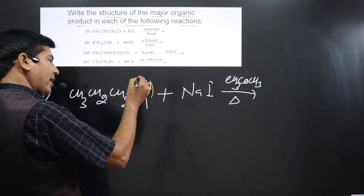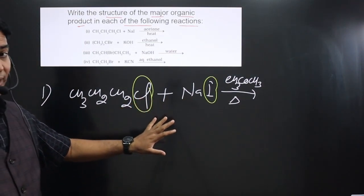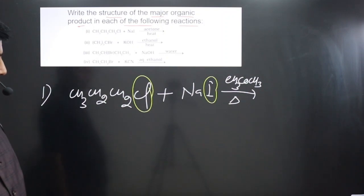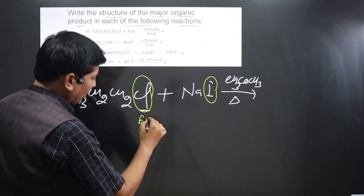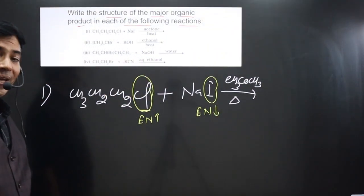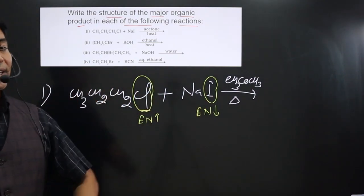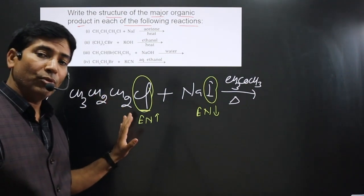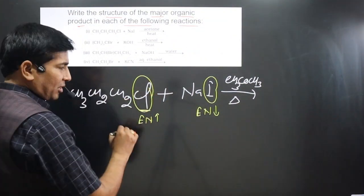Pay attention carefully — you can see both the halogen on the carbon chain and the halogen on the metal are highlighted. This means it is a halogen exchange reaction, known as the Finkelstein reaction. The condition is: the halogen attached to the carbon chain should be more electronegative, and the halogen attached to the metal should be less electronegative. Then the exchange takes place.